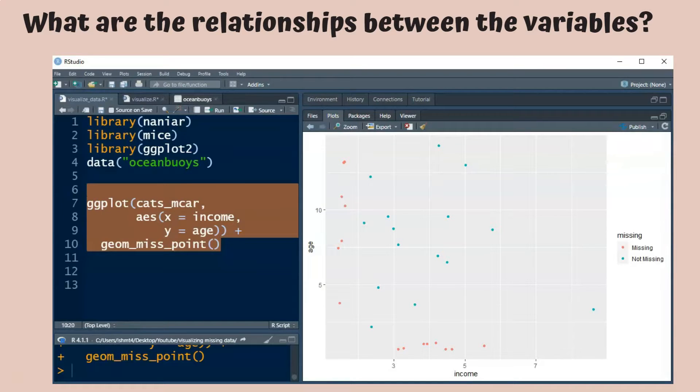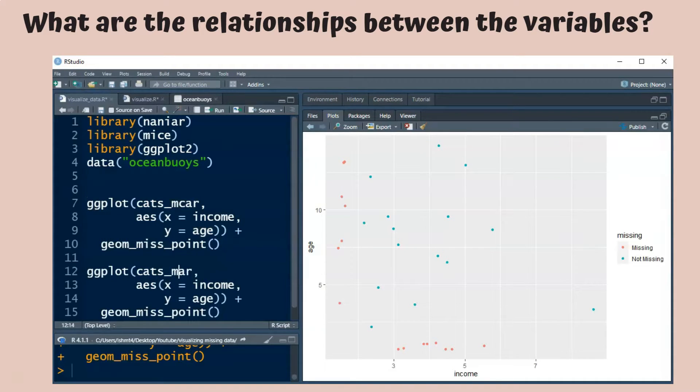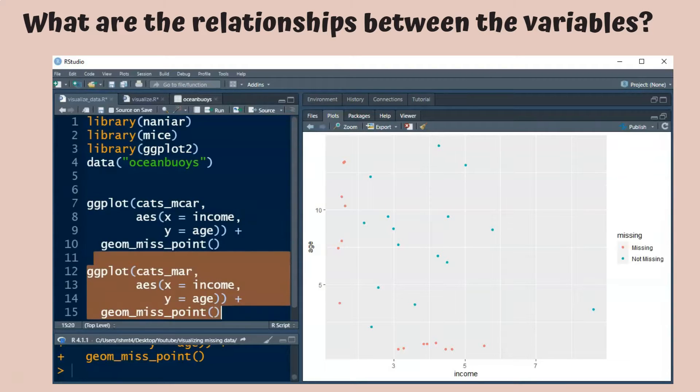In this MCAR data set, we don't observe any obvious patterns in the missing variables when we look at this relationship. If we instead create this plot for the MAR data set, we will observe that many of the missing values for income occur where age is large. And this is expected because of the way that we generated this data set.